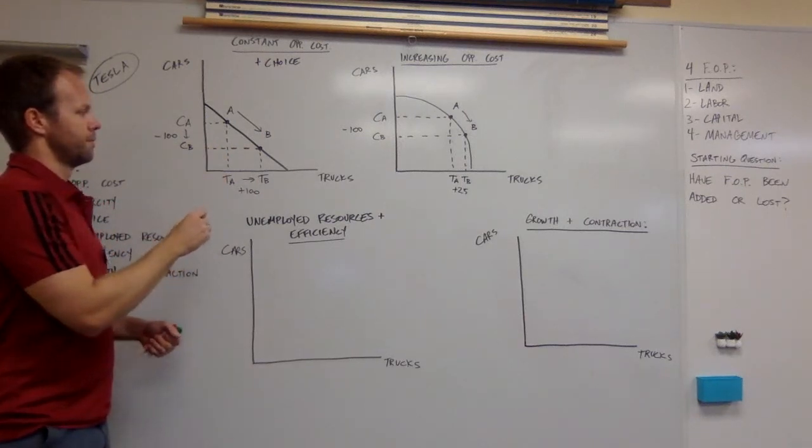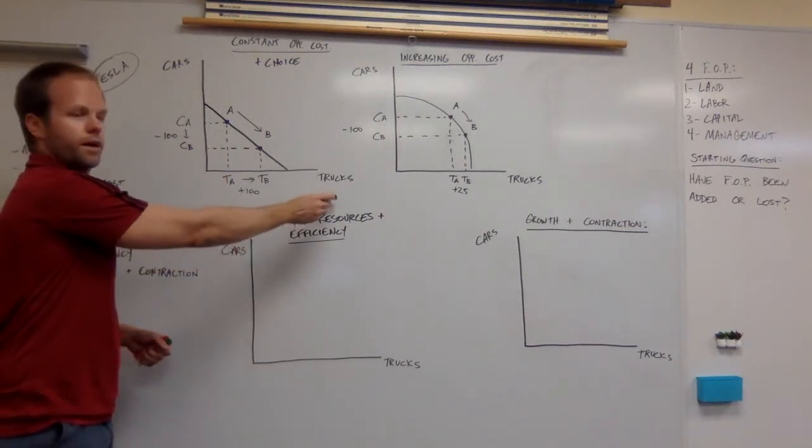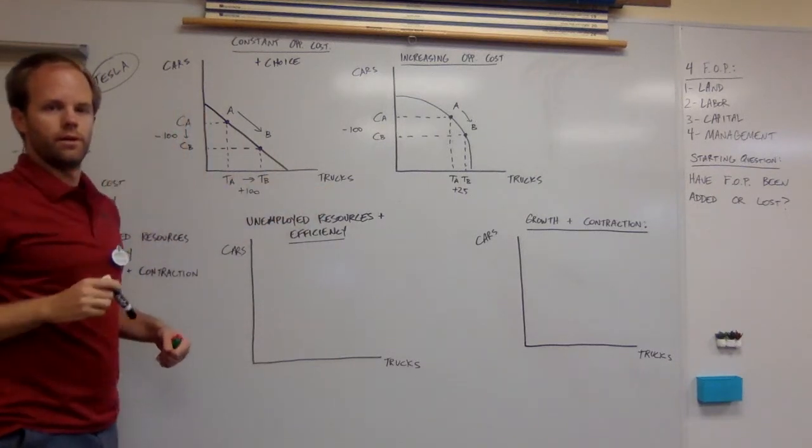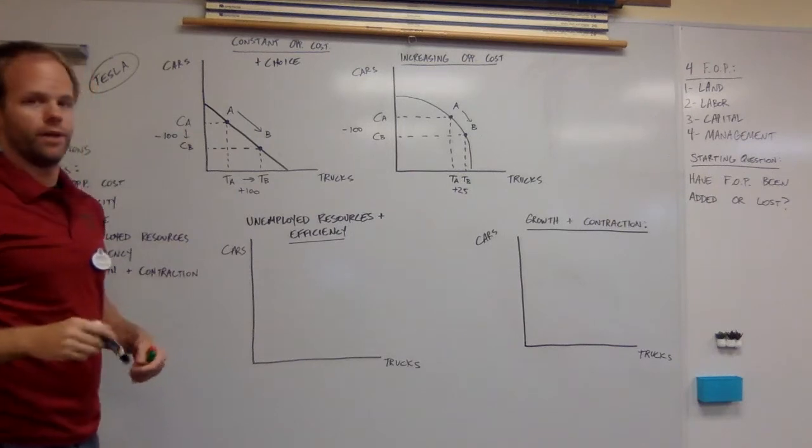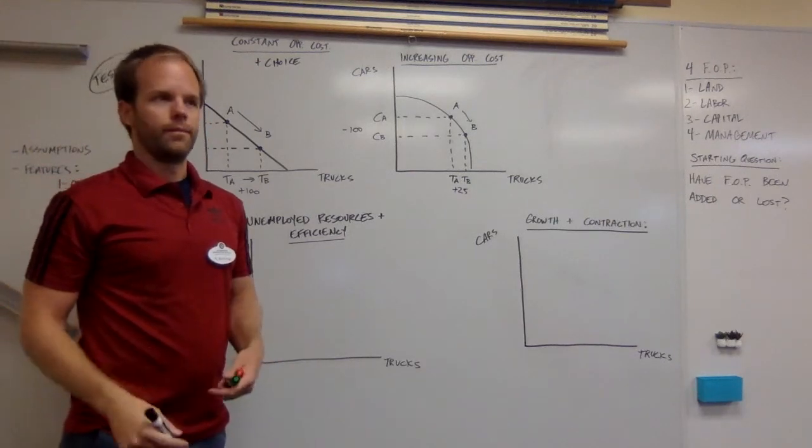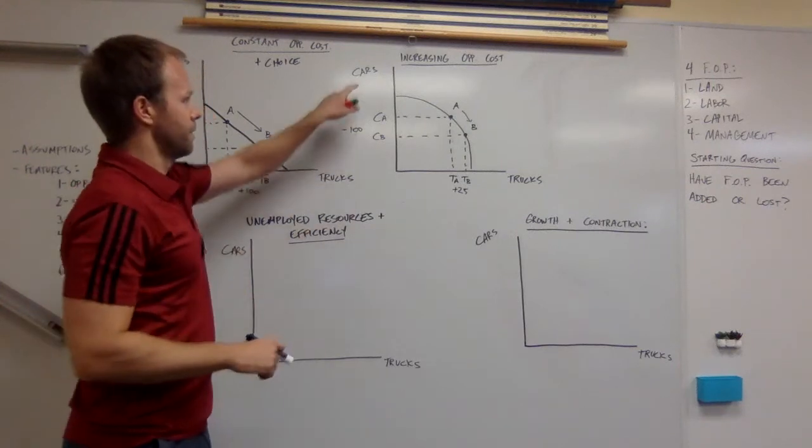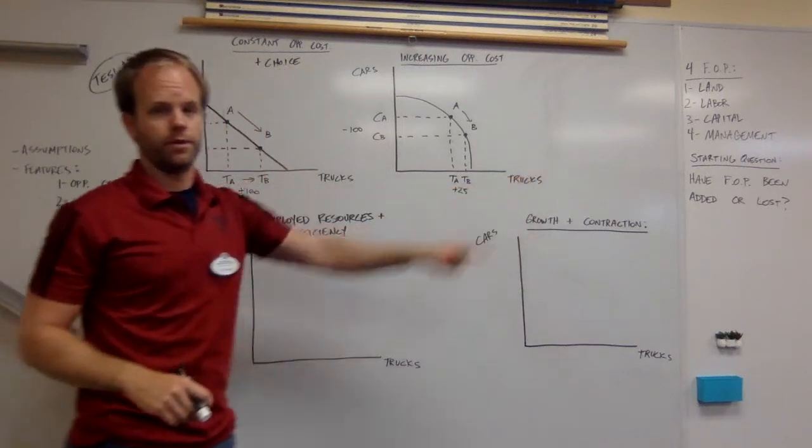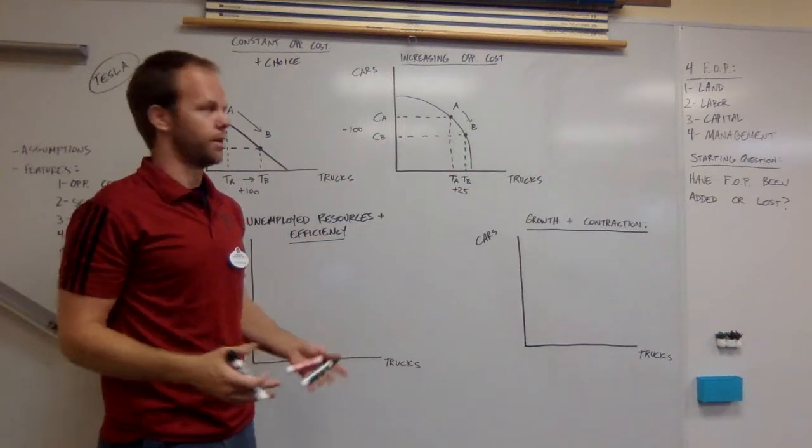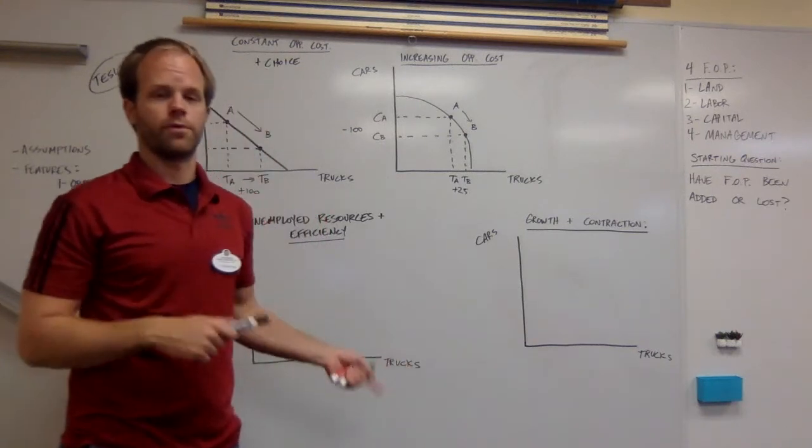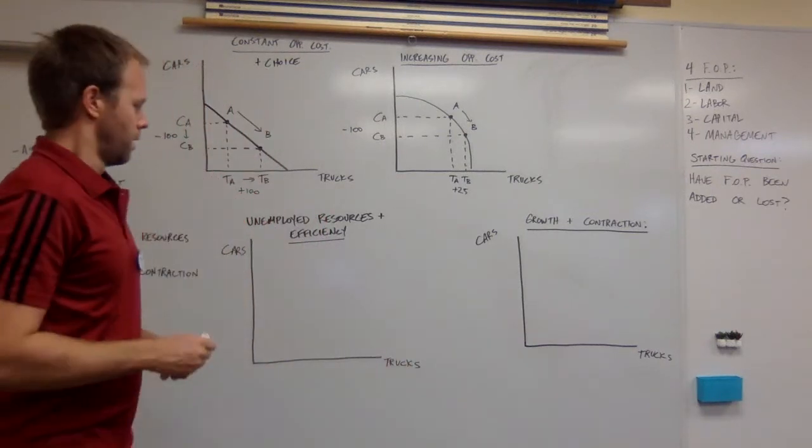If Apple wanted to make 100 more iPads, they'd probably give up 100 iPhones. Whereas if you make two things that are totally different, let's say Apple wants to make iPhones and the wireless earbuds, those are two totally different products, in which case they probably have an increasing opportunity cost to switch from one to the other.